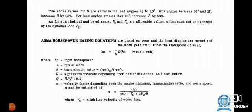Q = R / (R + 2.5), M = velocity factor depending on center distance, M = 450 / (450 + V_W + 3V_W / R), where V_W = pitch line velocity of the worm.